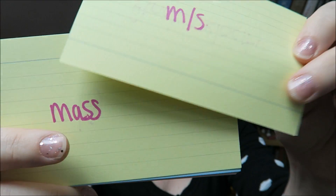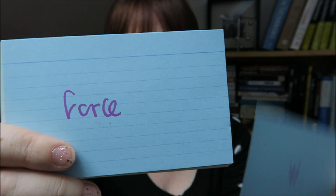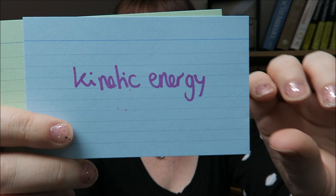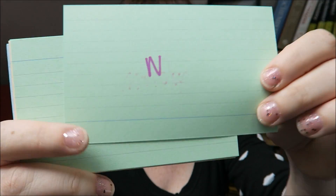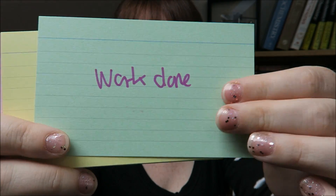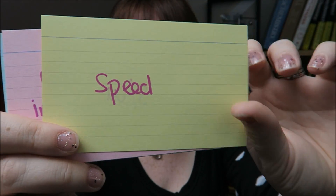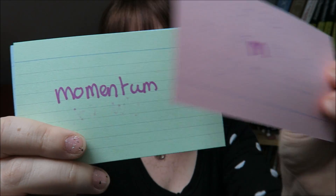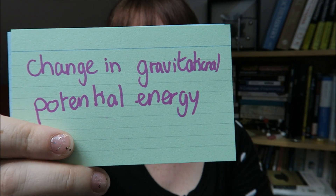Final velocity? Meters per second. Mass? Kilograms. Power? Watts. Force? Newtons. Kinetic energy? Joules. Weight? Newtons. Work done? Joules. Speed? Meters per second. Distance moved in the direction of the force? Meters. Momentum? Kilogram meters per second.